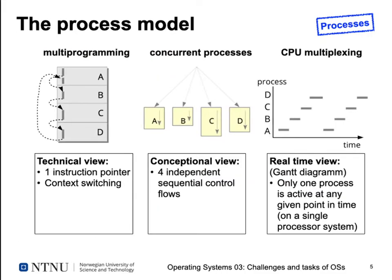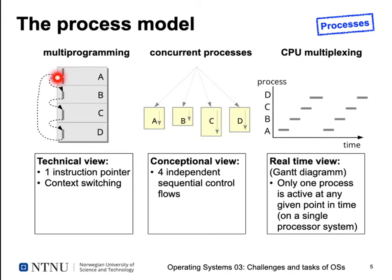How can we think about processes executing? This depends on your view of a system. The first view is multi-programming: we start with process A, switch to process B, then C, then D, and after a while D switches back to A, which continues exactly where it left off. The operating system needs to save where A was interrupted when switching to B so that, when it's A's turn again, it can continue at exactly the point where it left off. This is a processor view — the processor just executes instructions one after the other.